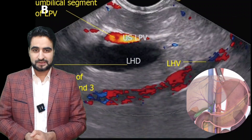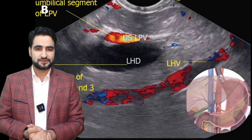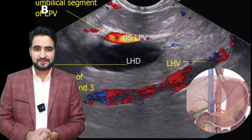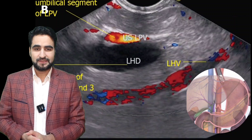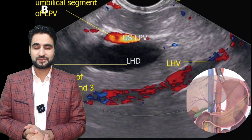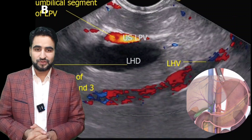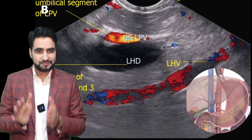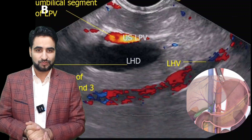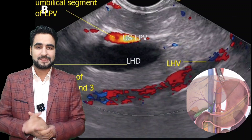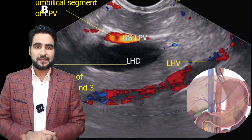The left hepatic vein is another key landmark here. It is seen coursing from the 2 o'clock position to the 7 o'clock position across the image. This trajectory means the left hepatic vein is running superior to inferior and posterior to anterior through the acoustic plane. At this stage, we are visualizing the union of segment 2 and segment 3 ducts in front of the left portal vein, with the left hepatic vein providing an oblique vascular reference across the image.